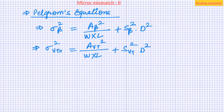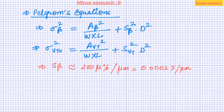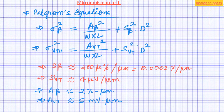D here indicates the distance between two transistors. The unit of S_beta is percentage per micrometer and its value is a few hundred micro-percent per micrometer. Similarly, the unit of S_VT is microvolt per micrometer and its value is a few microvolts per micrometer. Notice that these values are many orders of magnitude smaller than the corresponding values of A_beta and A_VT.